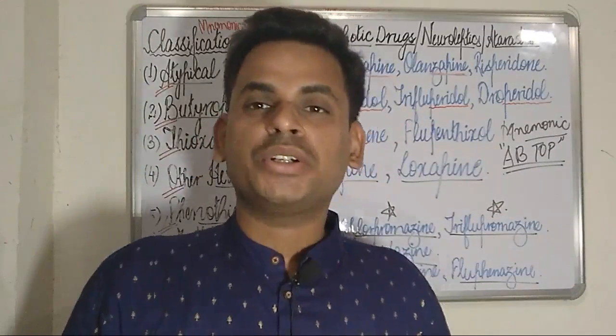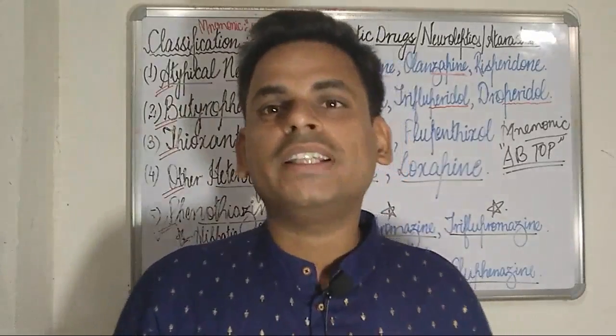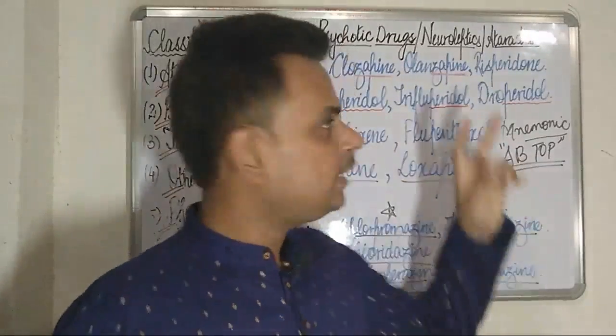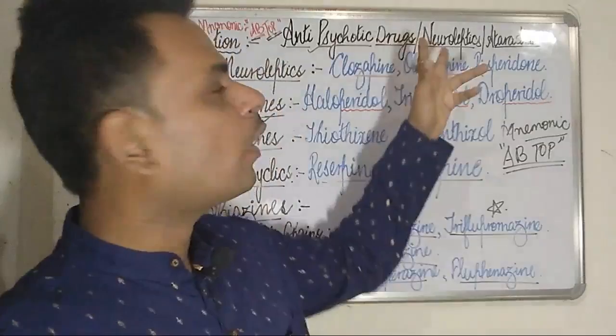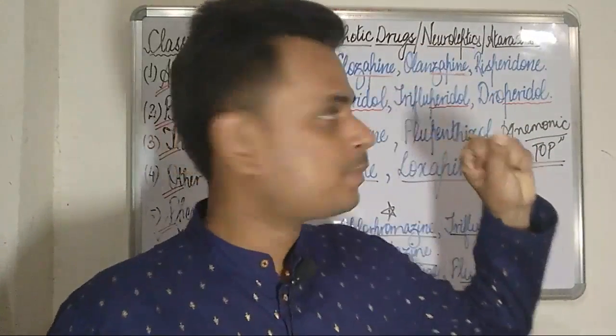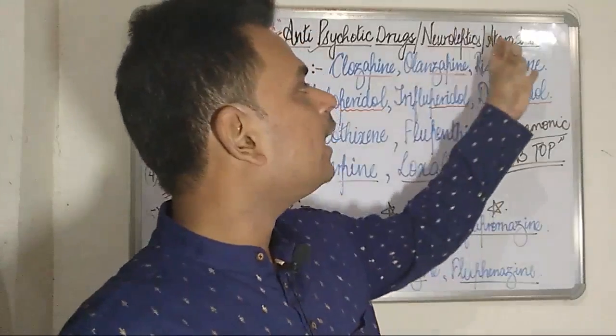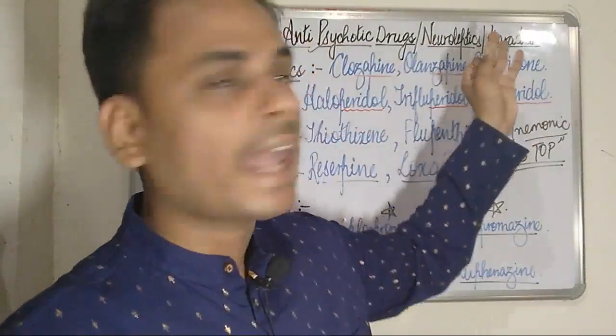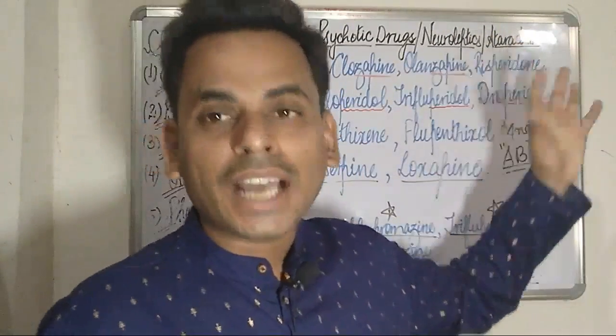Welcome to the next session of the pharmacology discussions. Today's topic will be mainly about the antipsychotic drugs. These antipsychotic drugs have been given two other names — they are also known as neuroleptics, and they have also been called ataractics.